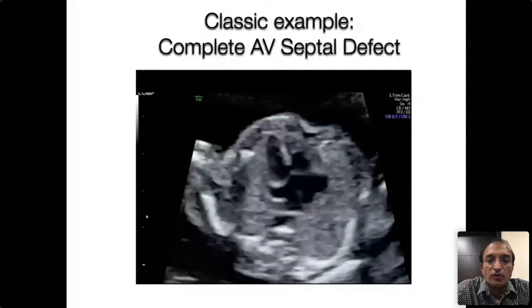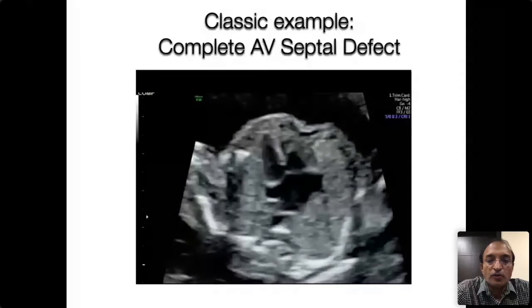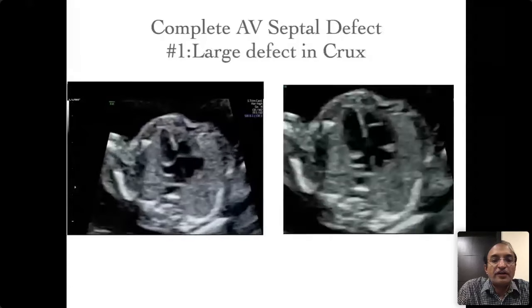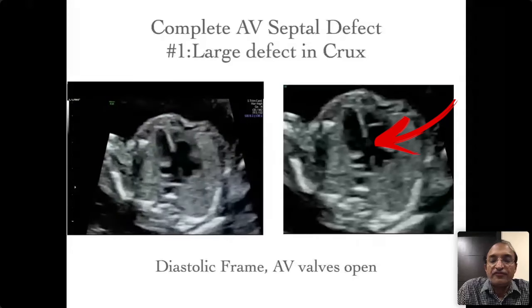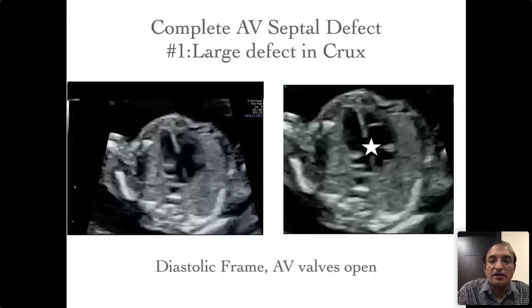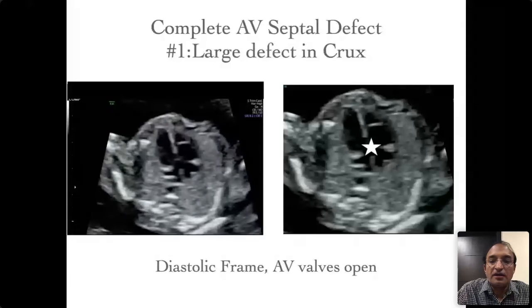The first component of the complete AV septal defect is a large defect in the crux of the heart. In a diastolic frame where the valves are open, you see a large defect in the crux of the heart. It is as if the entire central portion of the heart has been punched out.